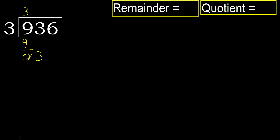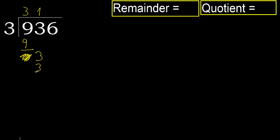Next, bring down. Eliminate 0. Bring down 3. 3 multiplied by 2 is 6 — it's greater. Multiply by 1: 3 is not greater. Subtract.